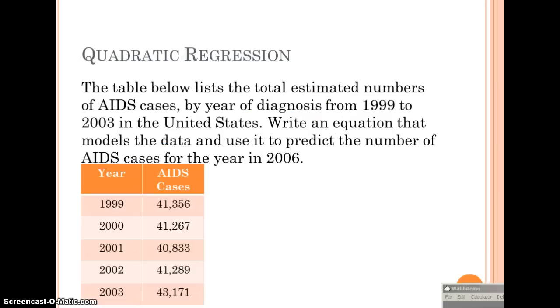For our second example, we've got quadratic regression. The table below lists the total estimated numbers of AIDS cases by year of diagnosis from 1999 to 2003 in the United States. Write an equation that models the data and use it to predict the number of AIDS cases for the year in 2006. We can see that 1999 could be our 0, 2000 could be our 1, and we have 2, 3, and 4.